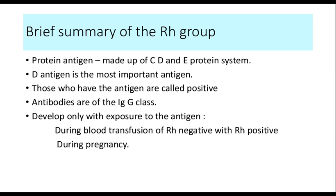Let's understand the Rh blood group system. It is made up of protein antigens consisting of three groups: C, D, and E, of which D is the most important antigen. Those who express the D antigen are called Rh positive and those who do not are called Rh negative. Antibodies that develop in the Rh system are usually of the IgG class and develop only when a person is exposed to the antigen. This usually occurs in blood transfusions of Rh negative people with Rh positive blood.